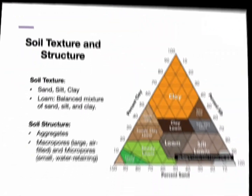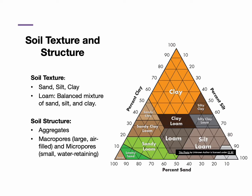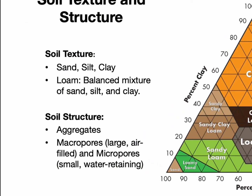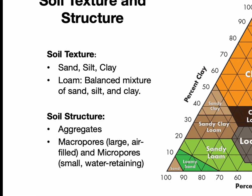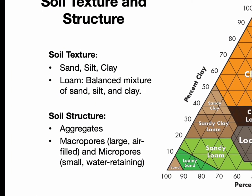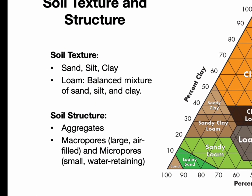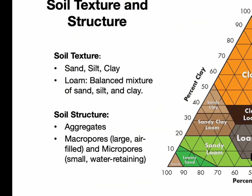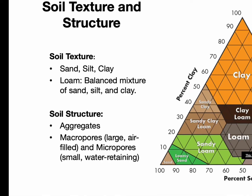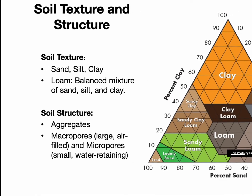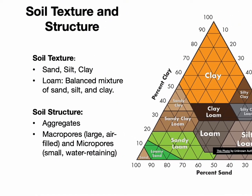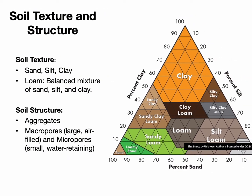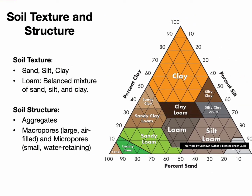Soil is made up of sand, silt, and clay in varying proportions. A balanced mix of these three creates loam, which is ideal for plant growth. The spaces between soil particles are called macropores and micropores, and they allow air and water to move through the soil. Macropores are the larger spaces — they allow water to drain and air to fill the gaps. Micropores, on the other hand, hold water that plants can access during dry periods.